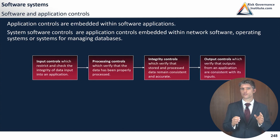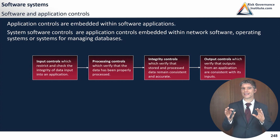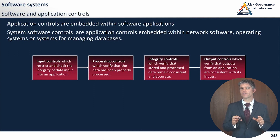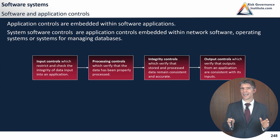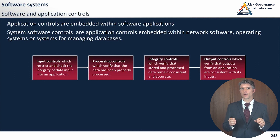Different integrity controls make sure that data is consistent and accurate. Finally, output controls verify that the outputs from an application are consistent with its inputs — that the result is what you were expecting at the beginning.